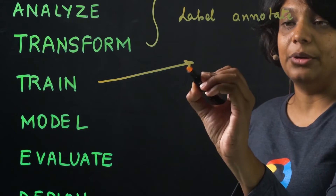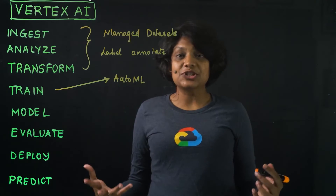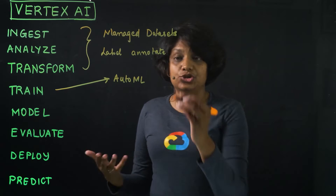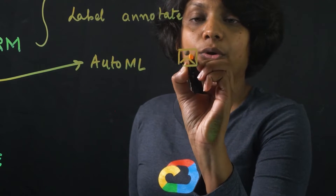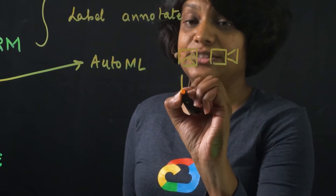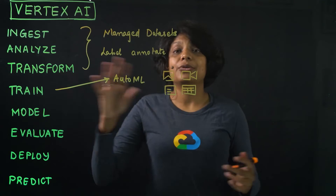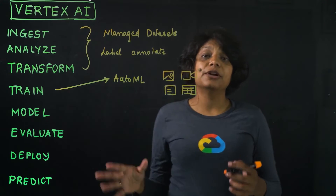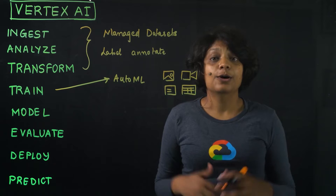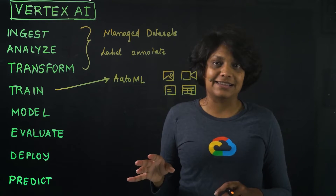For model training, you have two options: AutoML or custom. With varying machine learning expertise on the team, for some use cases such as images or videos, text files, and tabular data, AutoML works great. With AutoML, you don't need to write any of the model code. Vertex AI will take care of finding the best model for that task.